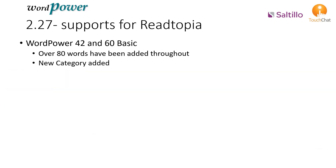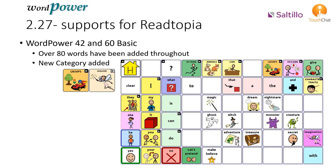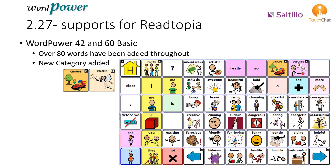A fun new category is added called Imagine, giving you access to words like magic, dream, ghost, witch, and monster. Another favorite is a character trait page, which is also linked in the reading page — great words for describing!